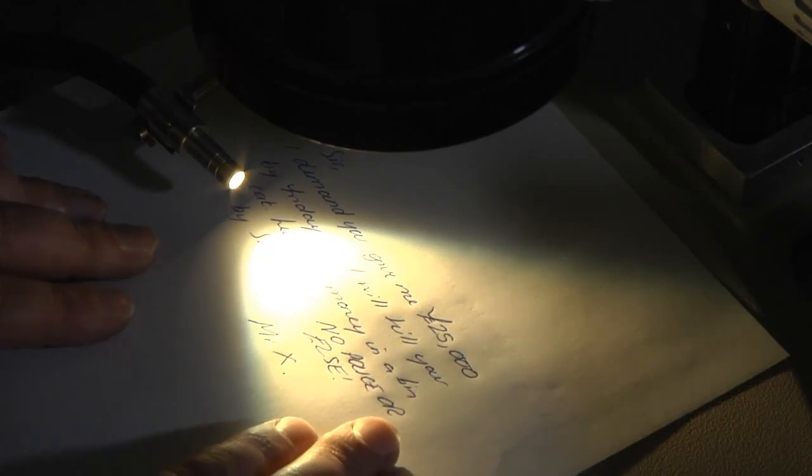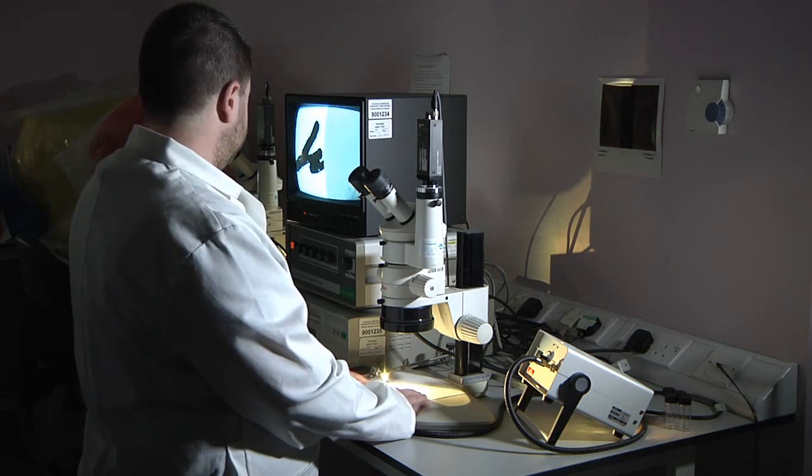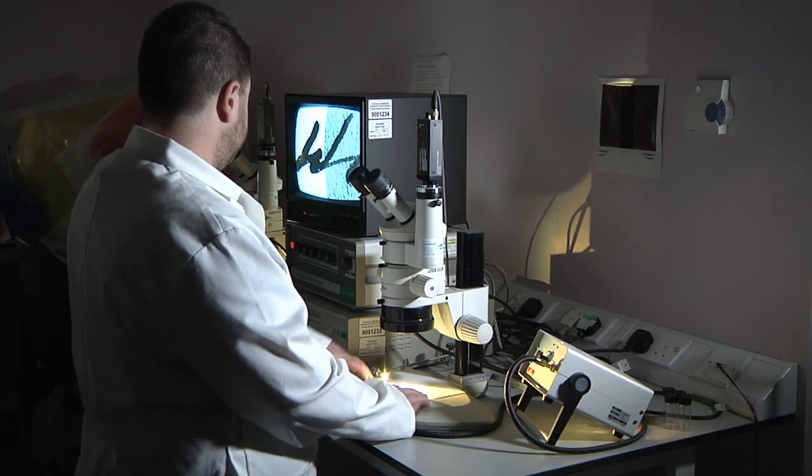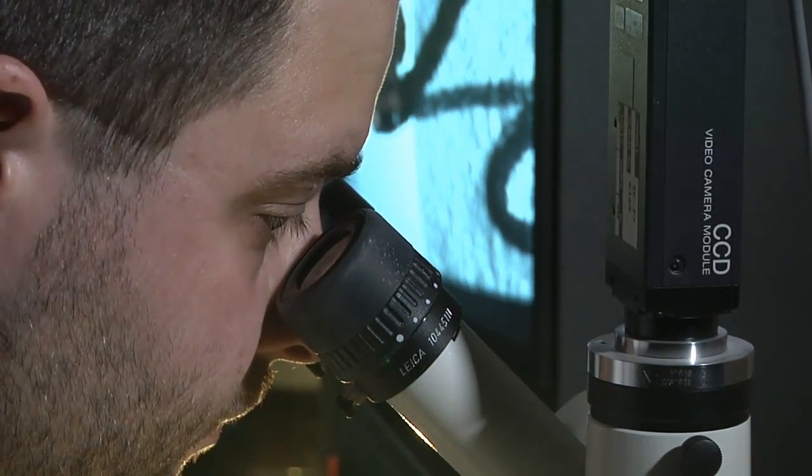In the 1970s, forensic scientists developed ways to test fountain, ballpoint, felt tip, and roller ball pen inks, so they were able to tell those with different chemical ingredients apart from one another.